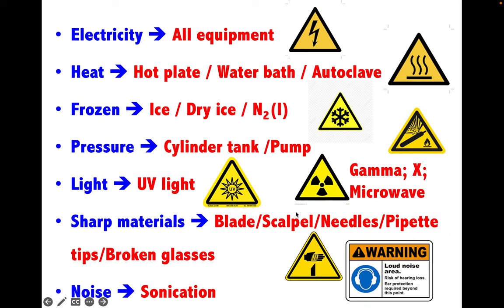There are many electrical equipment items operating in the laboratory; electricity hazard symbols must be placed on all such equipment. Heat generated from hot plates, water baths, and autoclaves must also be warned about at all times. Frozen hazards include dry ice, liquid nitrogen, and even ice. Pressure equipment includes selenium tanks of oxygen and carbon dioxide, and pumps. Light sources such as UV lamps, gamma ray, X-ray and even microwave. Sharp materials like blades, scalpels, needles, tips and even broken glass. And noise from sonication must be marked with the corresponding symbols.